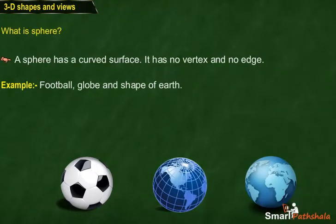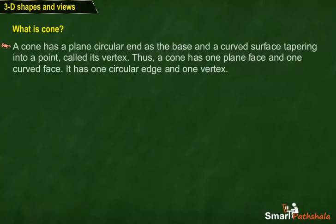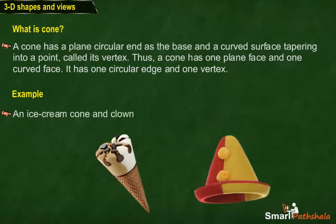Students, let's learn what is a cone. A cone has a plain circular end as the base and a curved surface tapering into a point called its vertex. Thus, a cone has one plain face and one curved face. It has one circular edge and one vertex. Examples include an ice cream cone and a clown's cap.